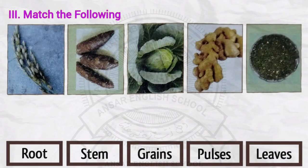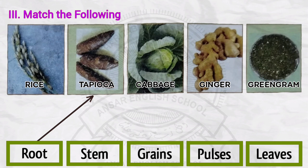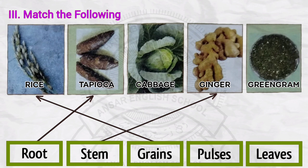Exercise number 3. Match the following. Here are pictures of rice, tapioca, cabbage, ginger, and green gram. Match them to: root, stem, grains, pulses, and leaves. Root matches to tapioca. Stem matches to ginger. Grains match to rice. Pulses match to green gram. Leaves match to cabbage.